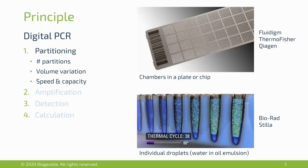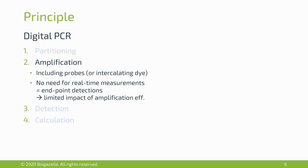The next step is amplification, quite similar to other PCR reactions — you include probes or in some cases intercalating dyes to detect which droplets or chambers have amplification products. There is no need for real-time measurements because digital PCR is an endpoint detection method. This means the effect of amplification efficiencies is less pronounced, so even with slightly suboptimal amplification efficiencies, digital PCR typically allows reliable quantification.